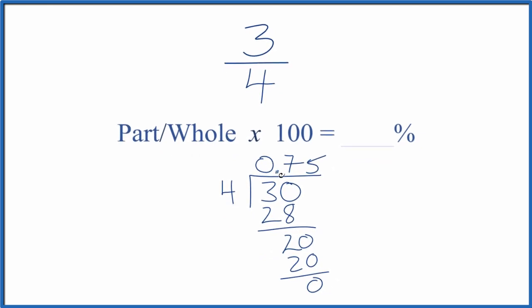So we end up with 0.75 when we divide 4 into 3. So we take 0.75 times 100. That'll give us 75%.